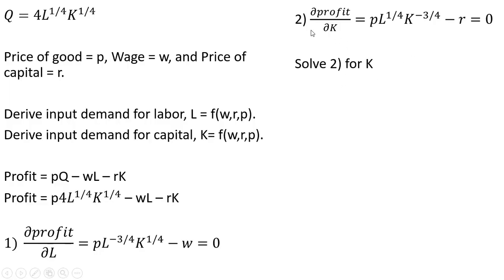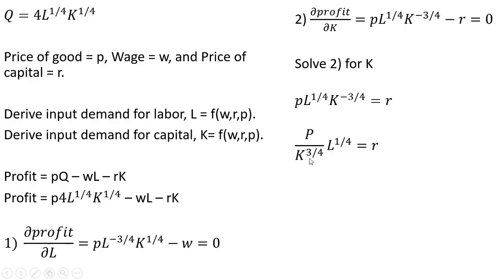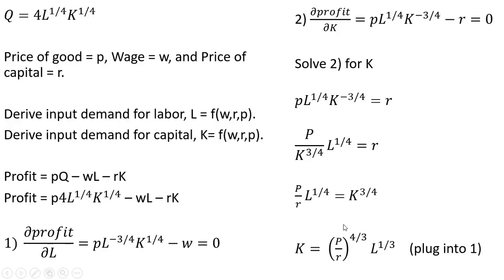Our next step is to solve equation 2 for K. Moving R over to the right-hand side. Following the rules of exponents, I'm going to move K into the denominator. And I'm going to multiply everything through by this K term and divide everything through by R. That leaves us with this expression. And now we're going to raise both sides to the 4 thirds power and get this result.